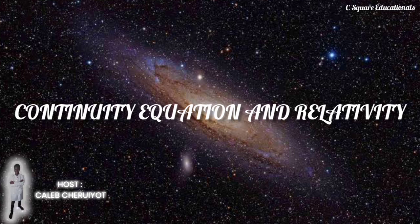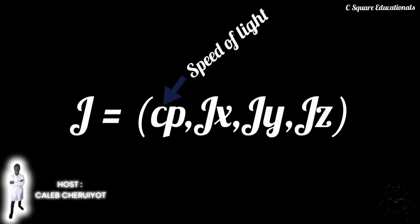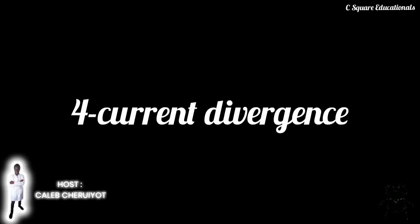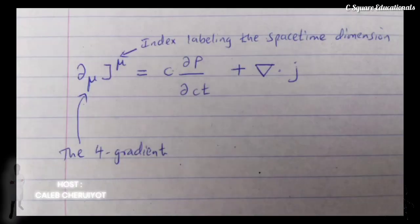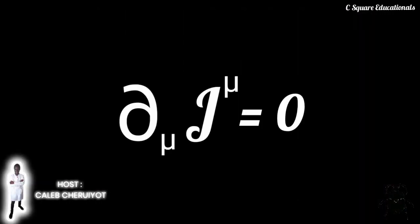The notation and tools of special relativity — especially four-vectors and four-gradients — offer a convenient way to write any continuity equation. The density of a quantity rho and its current J can be combined into a four-vector called the four-current. The divergence of this current is computed using the four-gradient partial-mu, where mu is an index labelling the spacetime dimension. The continuity equation then becomes partial-mu J-mu equals zero.